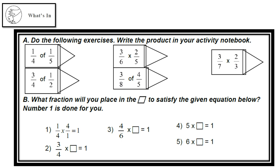Exercises number B: What fraction will you place in the blank to satisfy the given equation below? Number 1 is done for you as an example: 1/4 times 4/1 equals 1. Number 2: 3/4 times blank equals 1. Number 3: 4/6 times blank equals 1. Number 4: 5 times blank equals 1. Number 5: 6 times blank equals 1.